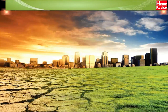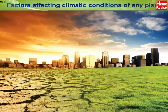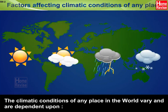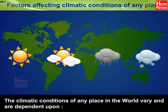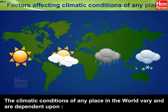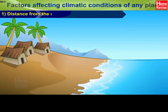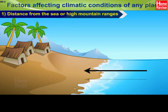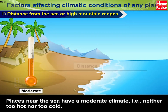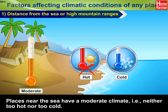Factors Affecting Climatic Conditions of Any Place: The climatic conditions of any place in the world vary and are dependent upon: 1. Distance from the sea or high mountain ranges. Places near the sea have a moderate climate, i.e. neither too hot nor too cold.